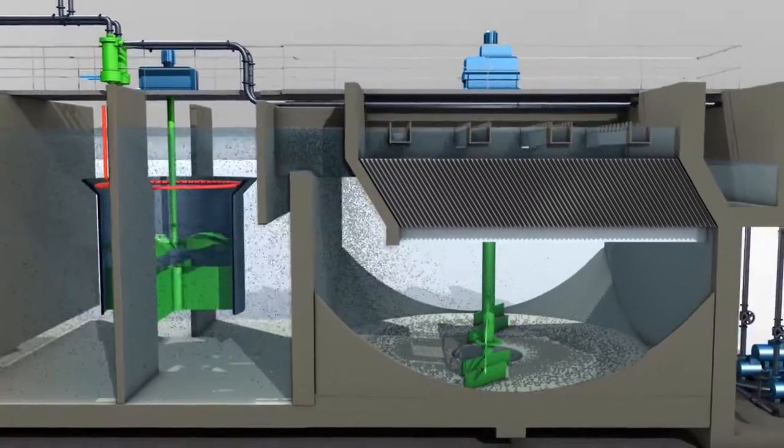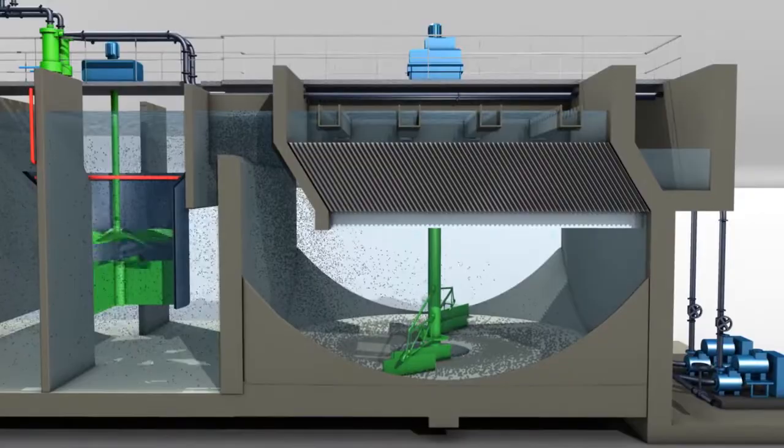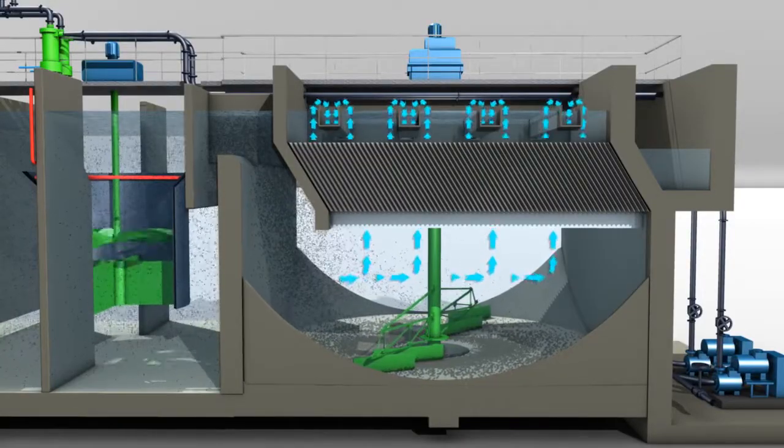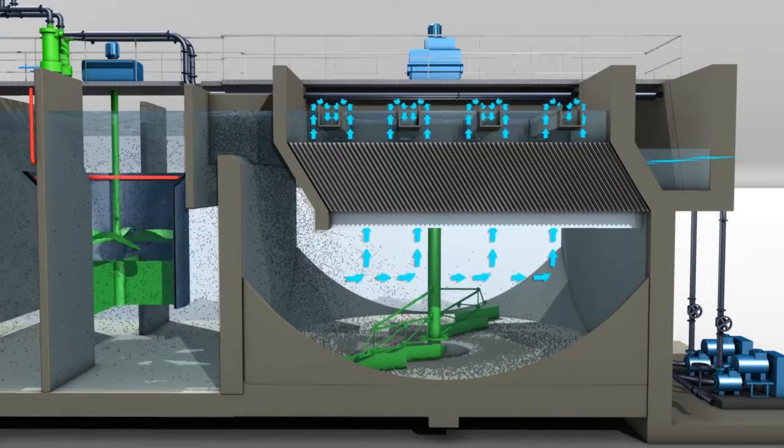There, the microsand ballasted flocks settle quickly to the bottom, whereas clarified water rises through the lamella, pours into a series of collection troughs, and then into the common effluent launder.